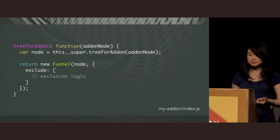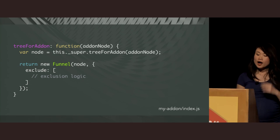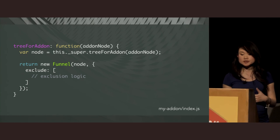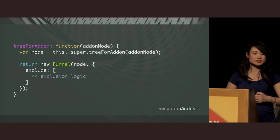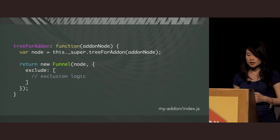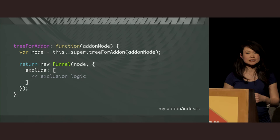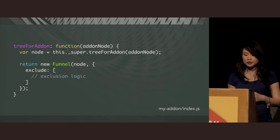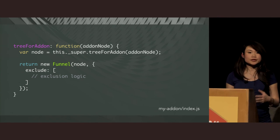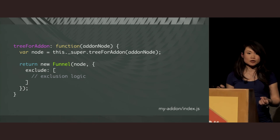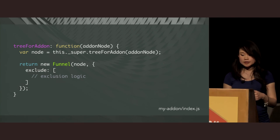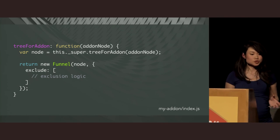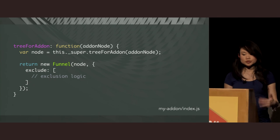If we didn't do anything, all the content from the addon folder would end up in the vendor files. What we want is to intercept this node and filter it out before things get written to the vendor file. This kind of filtering is exactly what the broccoli-funnel plugin allows you to do based on inclusion/exclusion criteria. In a simplified version of what Ember Metrics does, we implement the treeForAddon hook — the argument passed is the default addon source node, everything in the addon folder. We pass this node to an instance of broccoli-funnel, specify the exclusion logic, and return that instead.